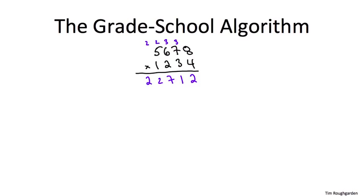When we do the next partial product, we do a shift. Effectively we add a zero at the end, and then we just do exactly the same thing. And so on for the final two partial products. And finally, we just add everything up.